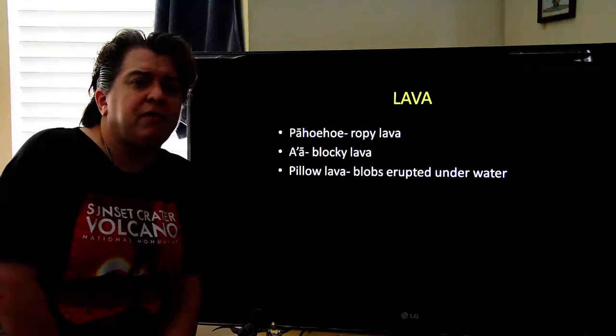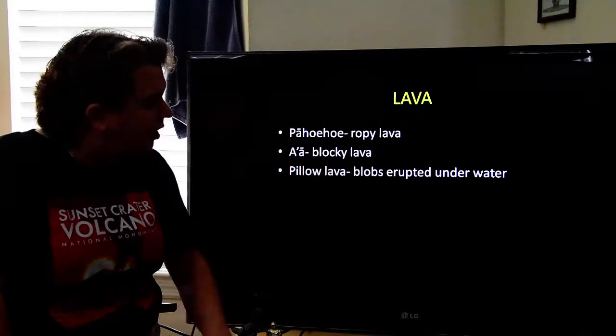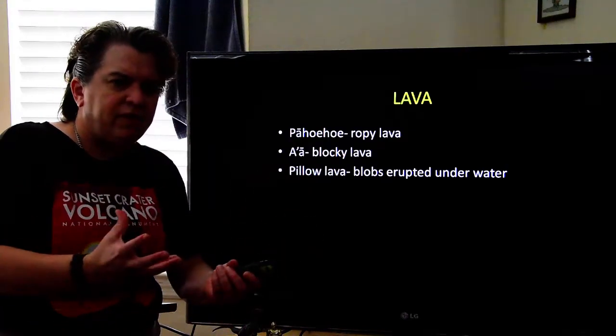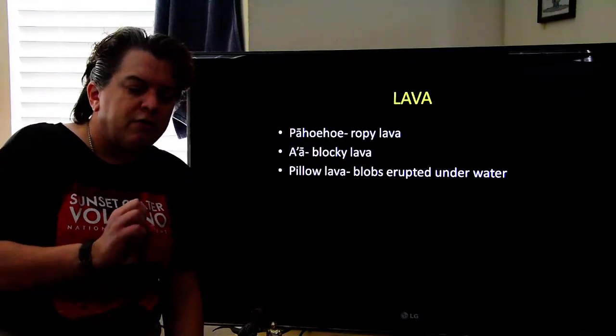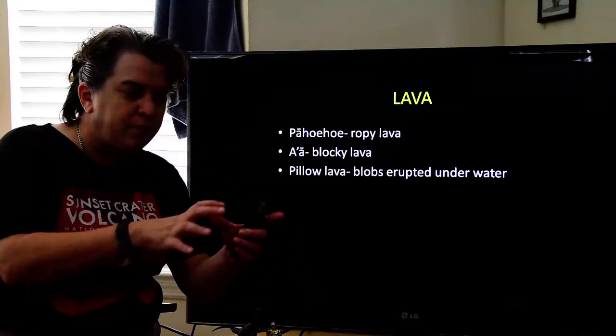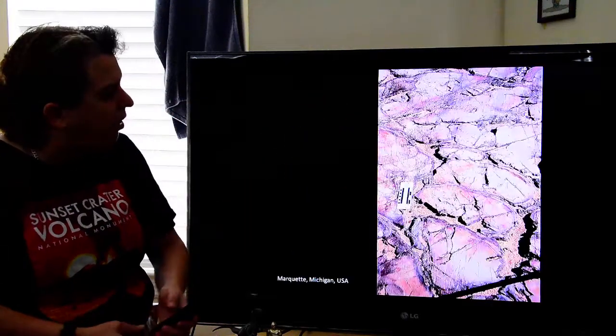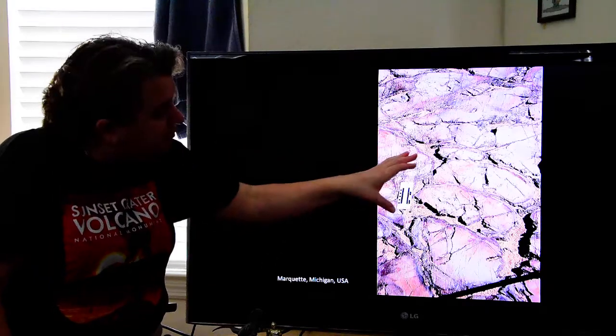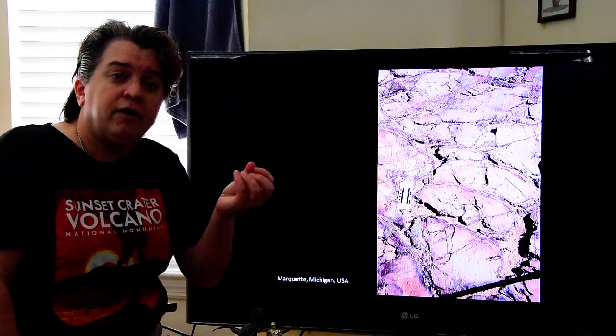Now, last of the types of lava that basalt will create as it erupts on Earth's surface is something called pillow lava. And pillow lava is where you get these blobs, these rounded blobs of lava erupting. And this happens when it erupts underwater. So as the lava comes out and hits that cold water, it quenches the lava immediately into this little blob. But more lava keeps coming out, and so you get a whole bunch of these rounded blobs of lava. And any time you see that, you know that lava originally erupted underwater.